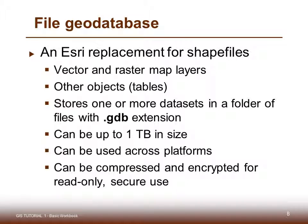File geodatabases are an ESRI replacement for shapefiles. Vector and raster map layers may be put inside a file geodatabase, but you should not store map documents — that is, map projects with the .mxd extension — inside the file geodatabase. You may store one or more datasets in a folder of files with the .gdb extension. They can be up to 1TB in size and can be used across platforms. They can be compressed and encrypted for read-only and secure use. When you create a geodatabase within ArcMap or ArcCatalog, choose the file geodatabase option.